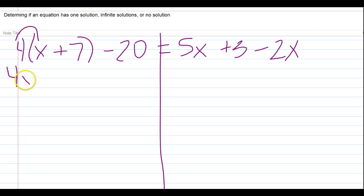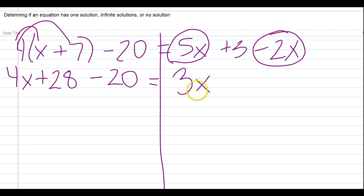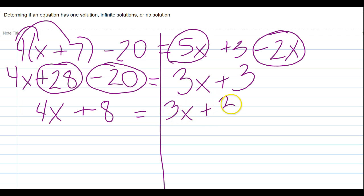We're going to do 4 times x, which is 4x, and 4 times 7, which is 28. So, 4x plus 28. I'm going to bring down that minus 20 since it wasn't part of the parenthesis. On the other side, we're going to take 5x minus 2x and combine those like terms. So, we're going to have 3x plus 3. Now, on the left side, we can combine like terms over here as well. We can do 28 minus 20 since those are both constants. So, we can get 4x plus 8 equals 3x plus 3.